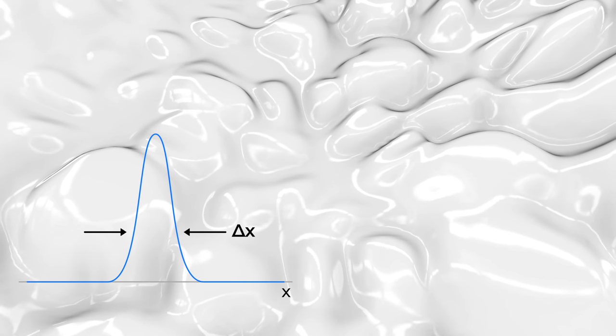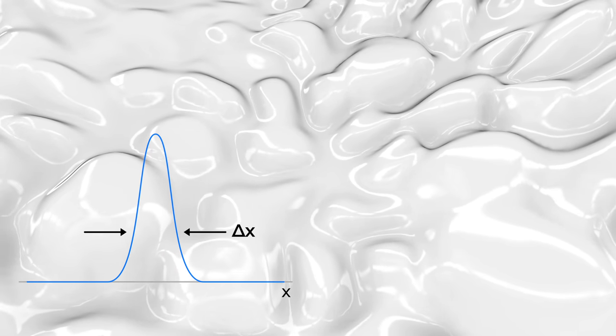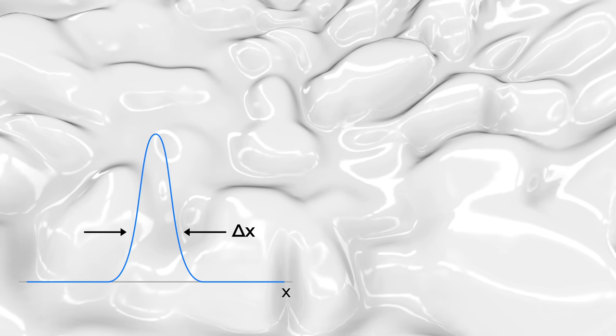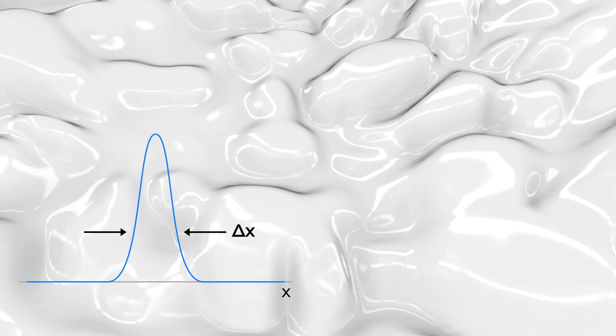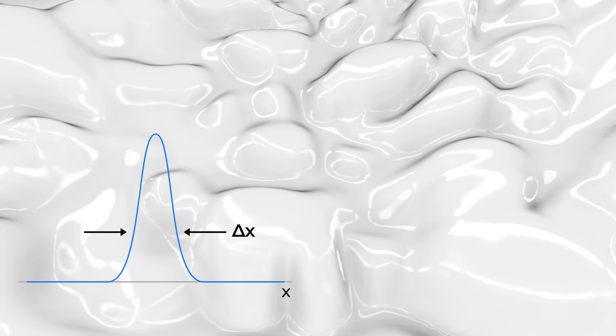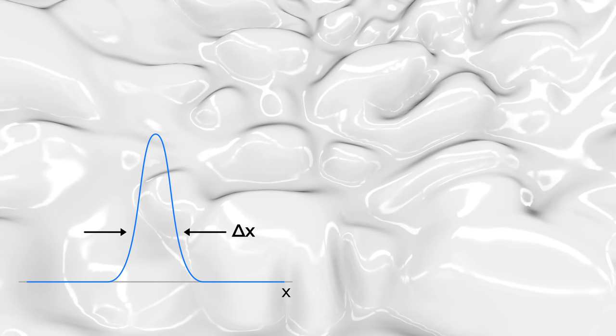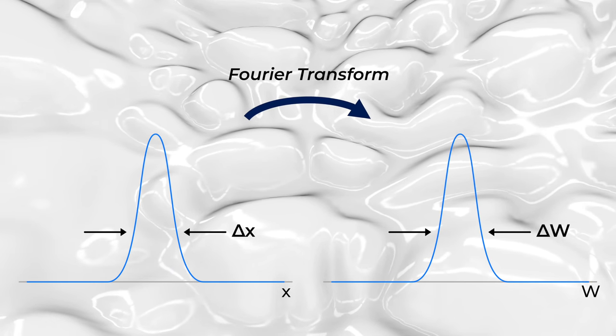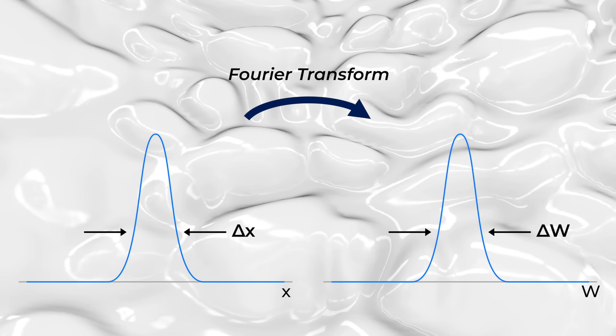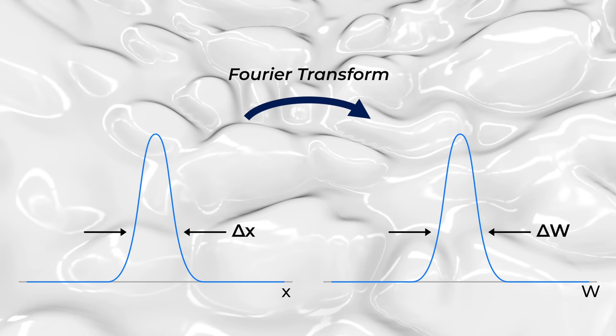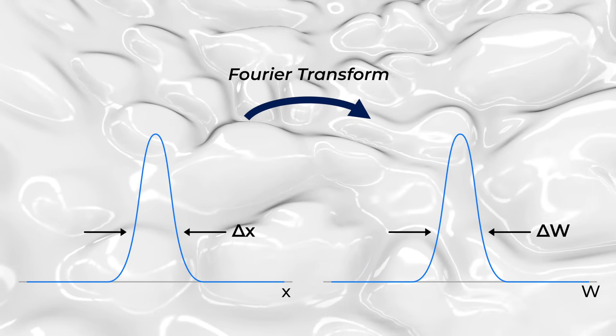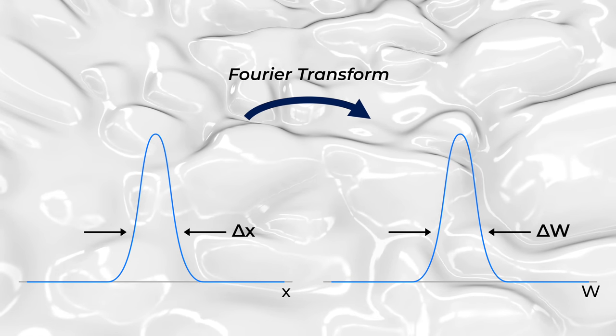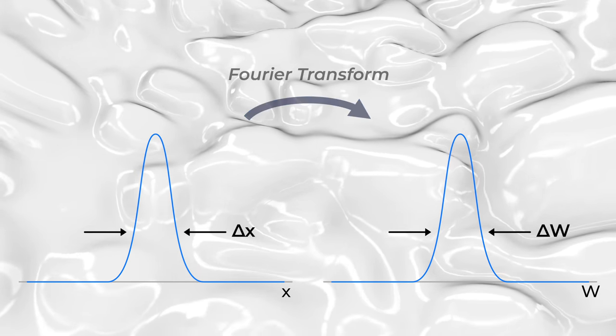So let's dig into a simple and somewhat realistic wave function. This one is called a normal distribution, sometimes called a bell curve, with a width we can call delta x. This width is a measure of the places the particle could be. Basically, delta x is the uncertainty in x. We can do a Fourier transform and find out what the shape of the curve will be in W space. It turns out that the Fourier transform of a normal distribution is also a normal distribution. That's just kind of weird, but it's how it goes. If you want to see the math, again, there's a link in the description.